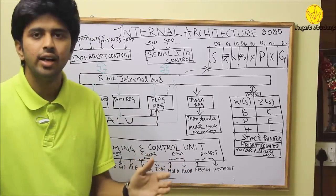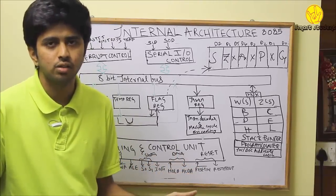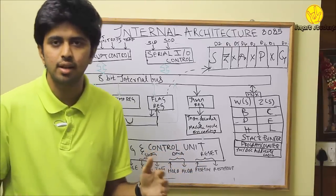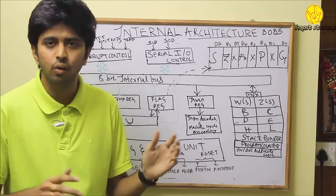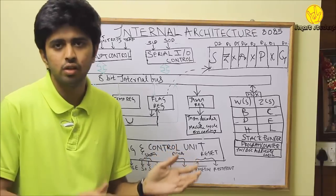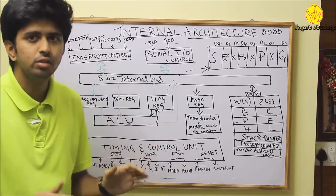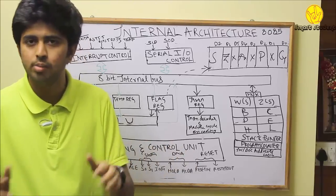Coming to the control signals: read, write, and ALE are called control signals. RD refers to read, WR refers to write, ALE refers to address latch enable. Read and write are active low signals. Read signal is used to read the data from the IO and the memory. Write signal is used to write the data into the IO and the memory.